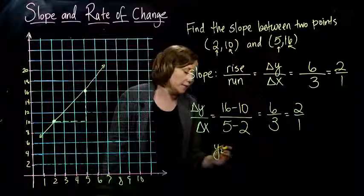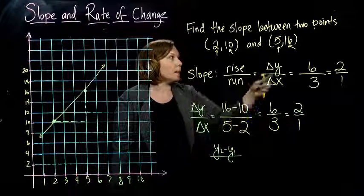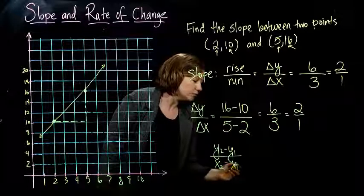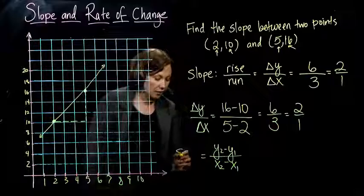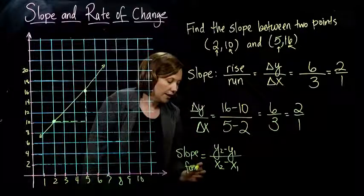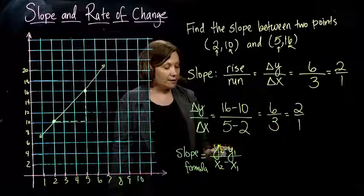And so, on the top is the change in y. So to find the change in y, I took the y value from the second point they gave me, and subtracted the y value from the first point they gave me. And then I took the x value from the second point, and subtracted the x value from the first point.